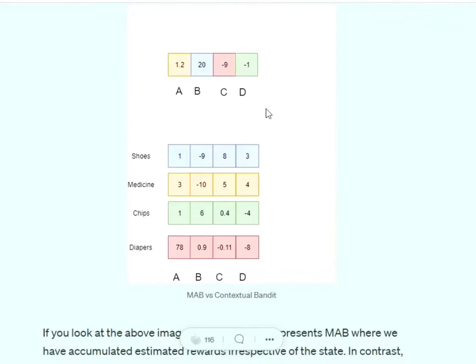How are contextual bandits different from multi-armed bandits? See this particular image. Assume ABCD to be four products we're trying to build a recommendation system over. If you're using MAB, you get B as the preferred product followed by A, D, and C.